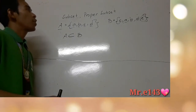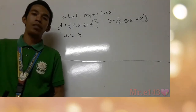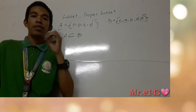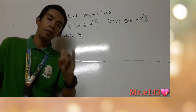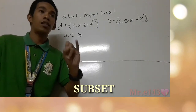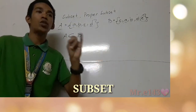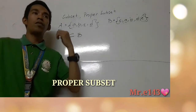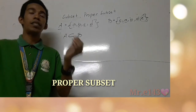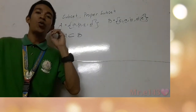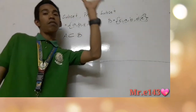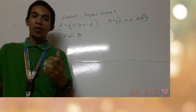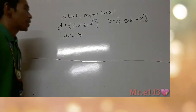So that's the concept of subset and proper subset. Remember: for subset, every element of the first set is also an element of the second set. For proper subset, every element of the first set is also in the second set, but there is at least one element in the second set that is not in the first set. It's a bit tricky — the difference is just that one condition.